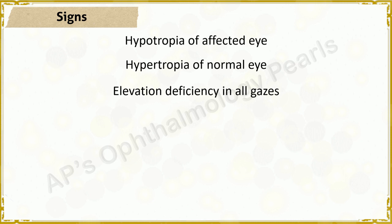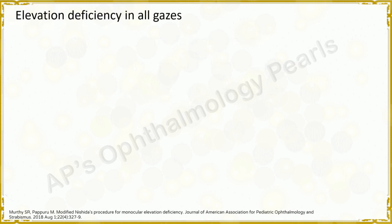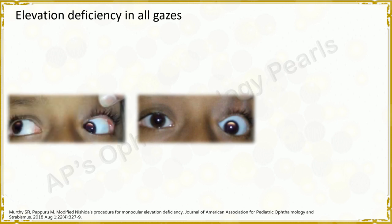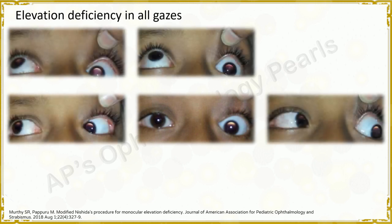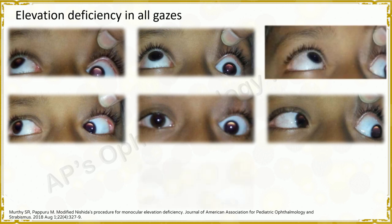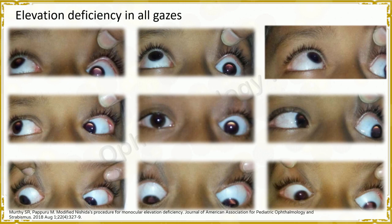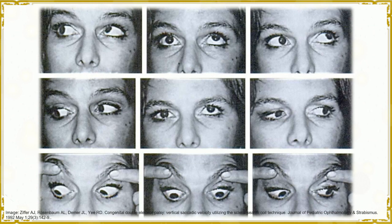Here we see hypotropia due to elevation deficiency in the primary position, dextroversion, levoversion, upgaze, dextro elevation, levo elevation, downgaze, dextro depression, and levo depression. This picture shows a person with an acquired right monocular elevation deficiency. Note, in the primary position, the affected right eye is used for fixation, causing a hypertropia of the normal left eye. Ptosis is absent.